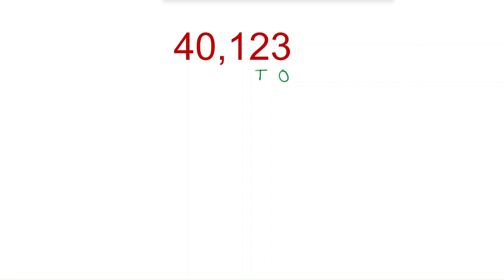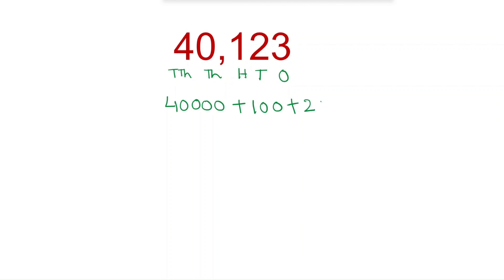For the next number: 3 is in the 1's place, 2 is in the 10's place, 1 is in the 100's place, 0 is in the 1000's place, and 4 is in the 10,000's place. That gives us 40,000 plus — since 0 is in the 1000's place, there's no need to write it — plus 100 plus 20 plus 3.